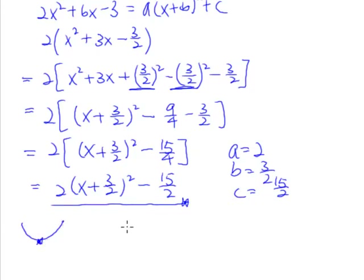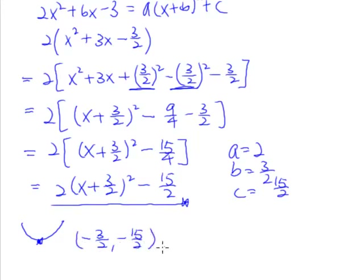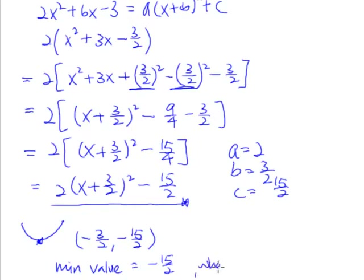The coordinate of the minimum point occurs when x is equal to negative 3 over 2, and at that point y equals negative 15 over 2. These are the coordinates of the turning point — the minimum point. Therefore, the minimum value of y is negative 15 over 2, and that happens when x is equal to negative 3 over 2.